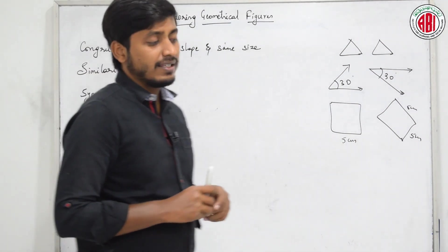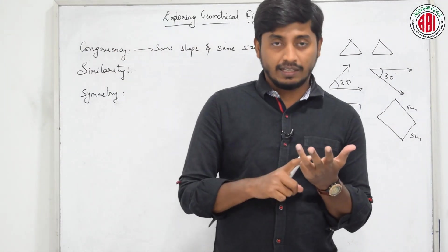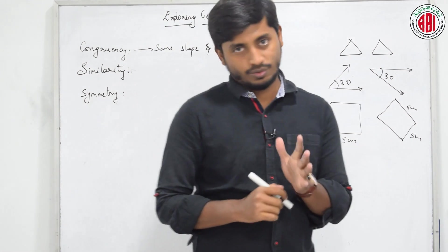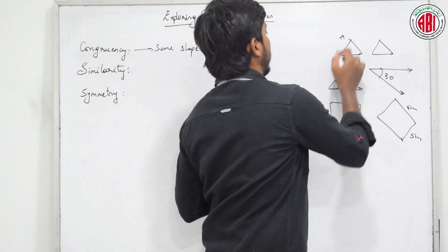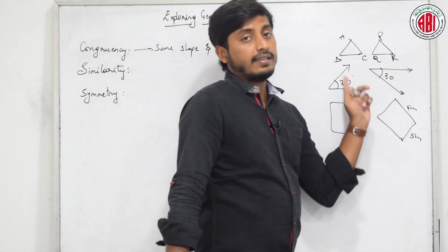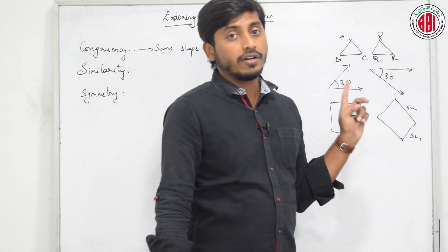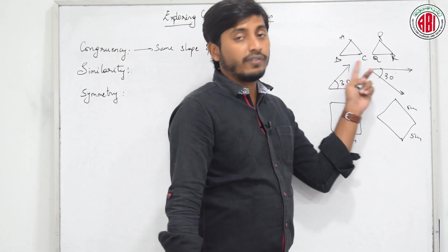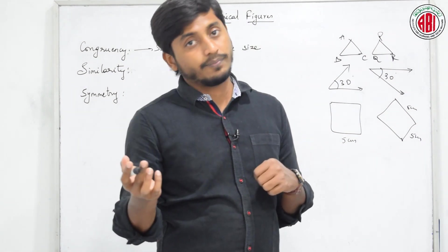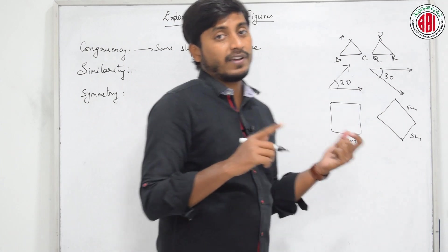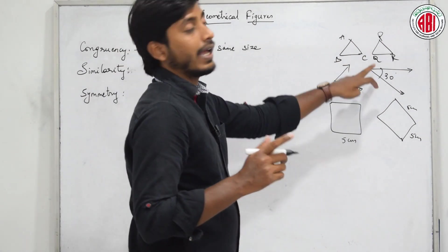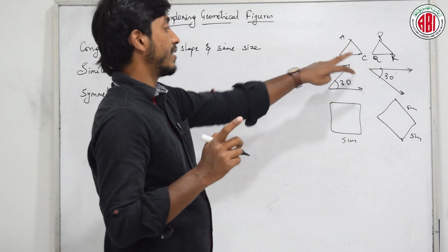Next is similarity. What is similarity? Similarity means they have the same shape - that is the basic rule. Let us consider two triangles ABC and PQR. They have the same shape, but I did not mention any measurements. Therefore we cannot judge whether they are congruent or not, which means they may have the same size or different size. For congruency we need two conditions: same shape and same size. First condition is satisfied, but second is not satisfied yet.